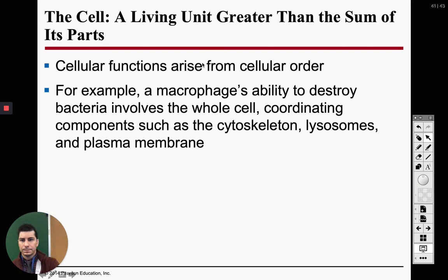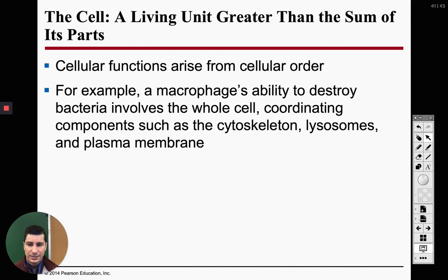Last slide — this is pretty much a sum of everything. Cellular functions arise from cellular order. We've got to make sure that everything is working together in our cells — coordinate components such as our cytoskeleton, our lysosomes, our plasma membrane — everything works together to keep your cell functioning properly and to help communicate with other cells. That is the end of the chapter.